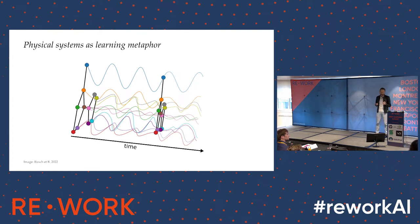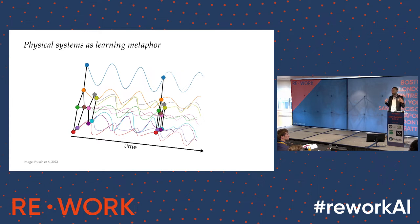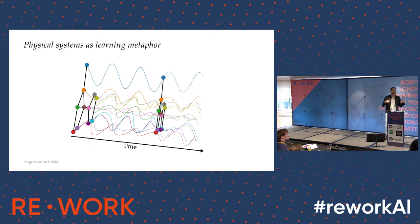For today's talk, I would like to completely change the mindset and think of learning on graphs through a physical metaphor. We want to think of graph neural networks as discretizations of continuous physical processes described by systems of differential equations. One such metaphor is a mechanical system: oscillators at every node of the graph are coupled together by the graph connectivity, and by solving this system with few learnable parameters, we can solve tasks on graphs more efficiently.